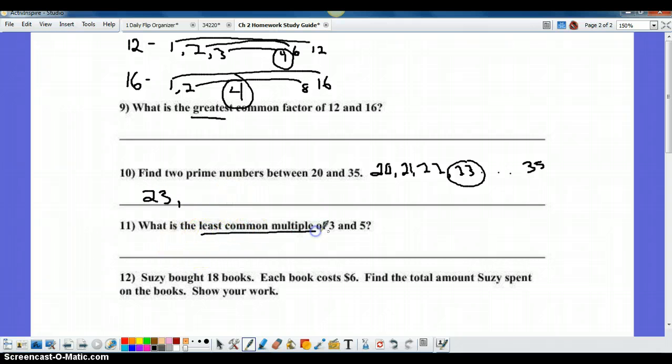Least common multiple. Once again, use the same strategy that we used for greatest common factor, except this time you're going to skip count: 3, 6, 9, 12, 15. Then for 5, I go 5, 10, and 15, and I found my least common multiple because it's the very first one that matches for the least common multiple. In this case, it's 15.